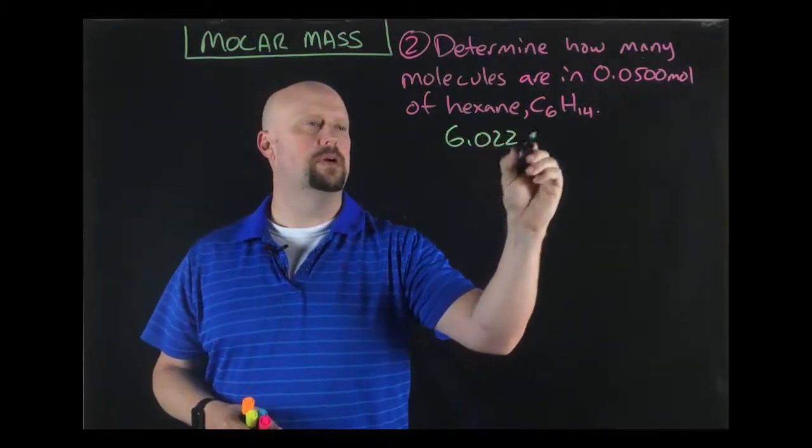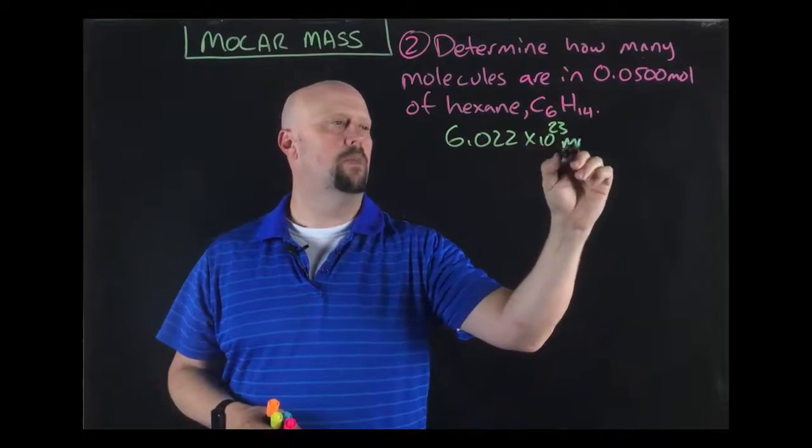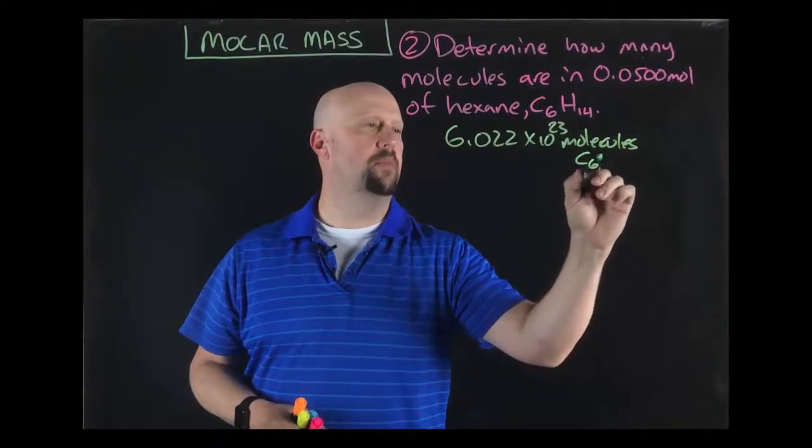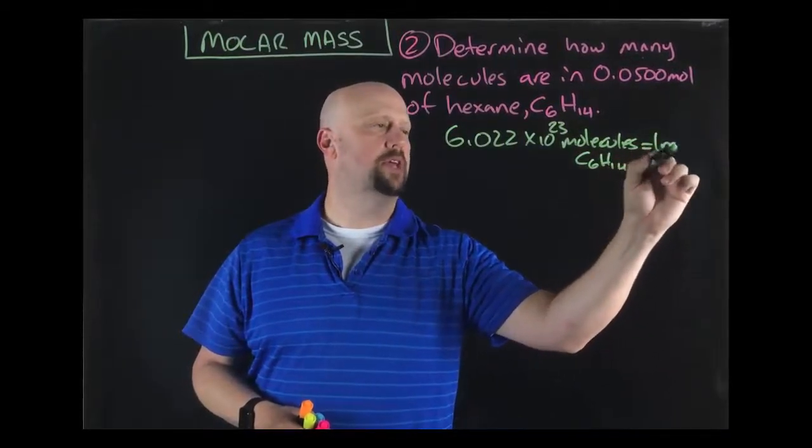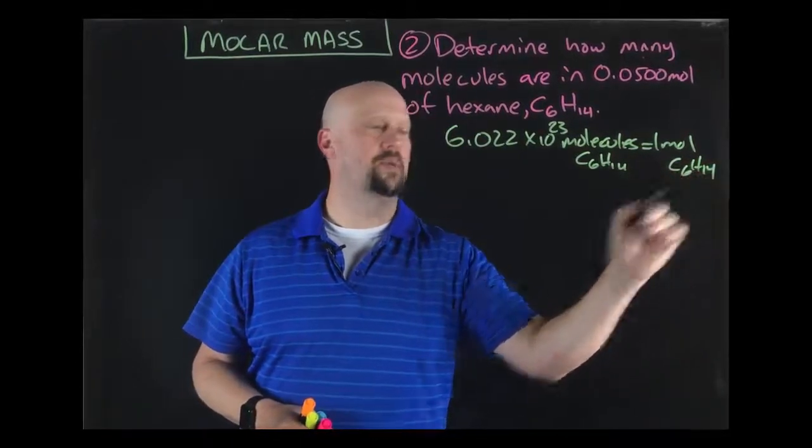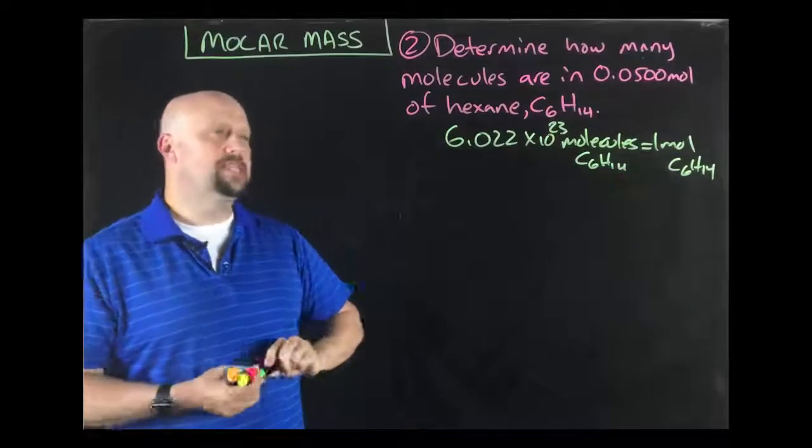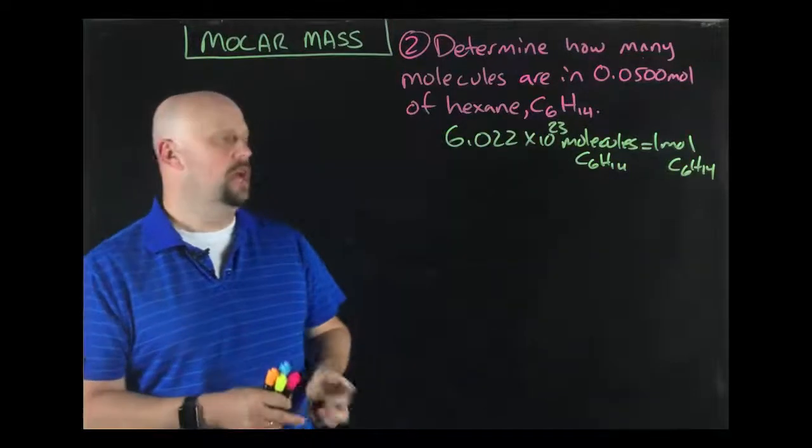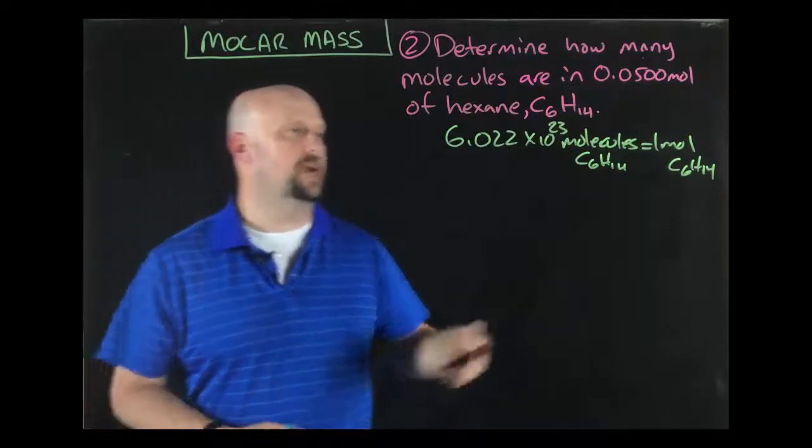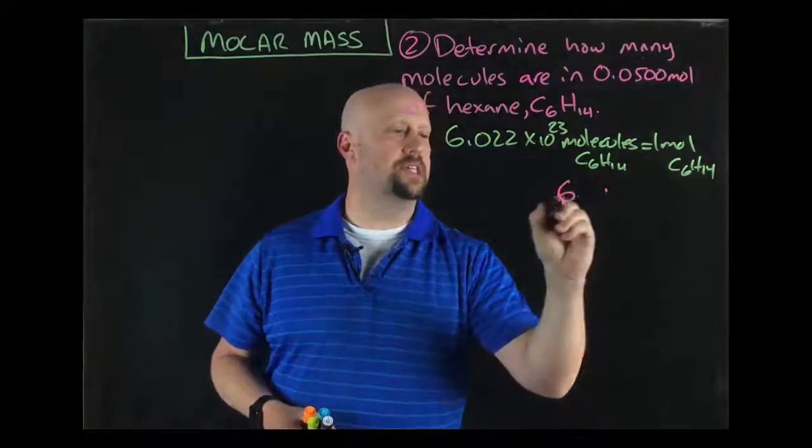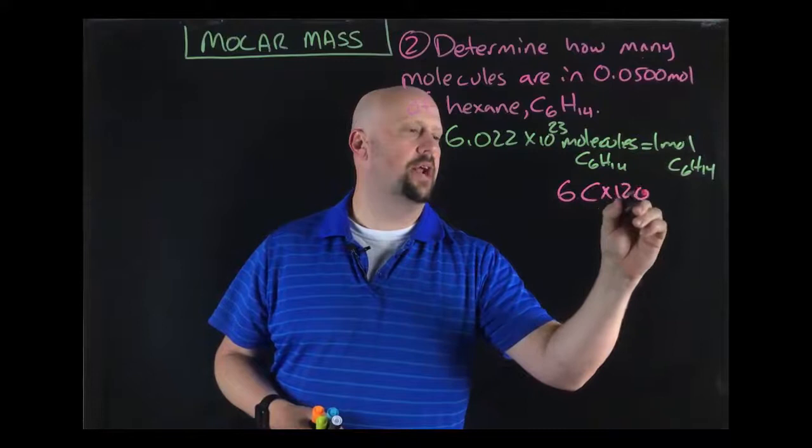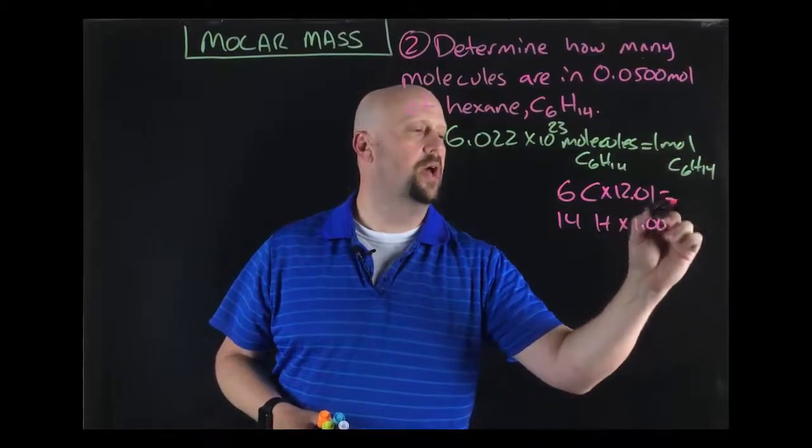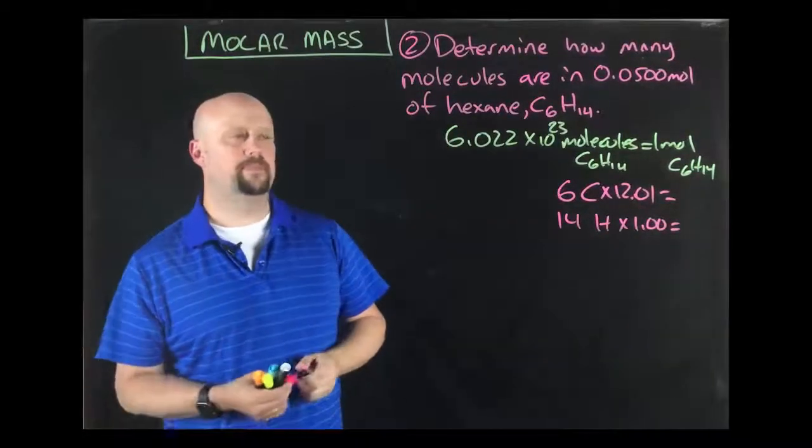So 6.022 times 10 to the 23rd molecules. Remember what we said in the previous videos, don't ever abbreviate molecules because it looks like moles and they don't mean the same thing at all. So you want to make sure that you're getting the right information down. And then the second thing is, we're talking about molar mass. We're doing a lot of the gram stuff. I've got the formula there. And so I need to go ahead and find my molar mass. So I'm going to start to write this down. I've got six carbons. And I start to look that up. And then I've got 14 hydrogens. Hydrogens are 1.0. And then all of a sudden you stop and you think, wait a minute. Hold on.